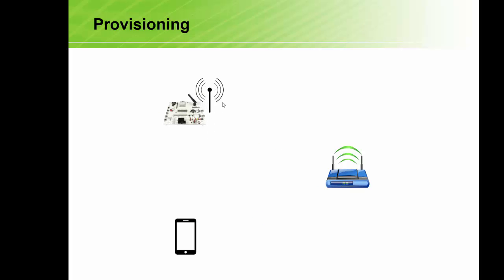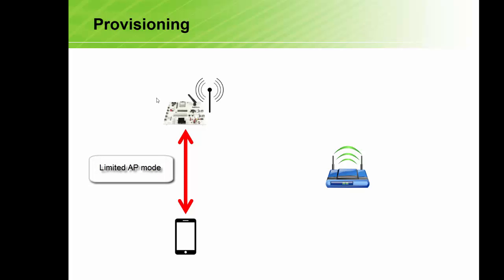To start off with, we have our Gainspan module host a limited AP network. This way, the smartphone can connect to it directly. We can actually use the limited AP network to talk to the sensors on the board. However, for most applications, we'd like to have a bunch of these connect to a single network, and also have the smartphone connect to that same network. That way, we can talk to all of the devices without switching networks each time.